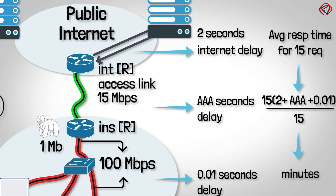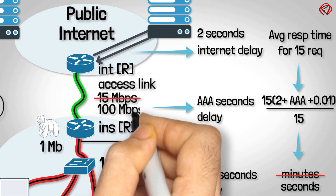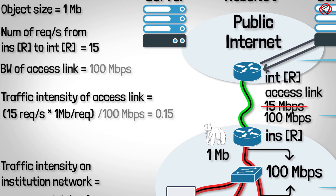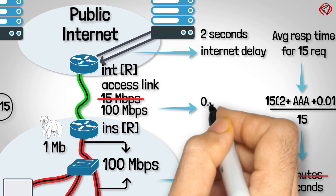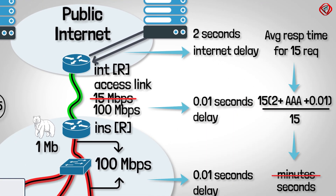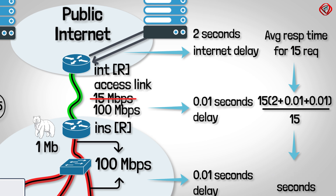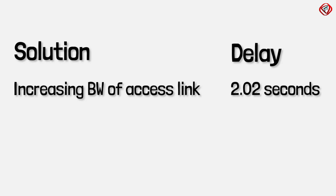To reduce the average response time from minutes to seconds, the first solution is to increase the access link speed from 15 Mbps to 100 Mbps. This creates a traffic intensity of 0.15, causing minimal delays of just 10 ms. As a result, the average time to receive the requested object for 15 requests is 2.02 seconds. So the first solution causes a delay of 2.02 seconds.